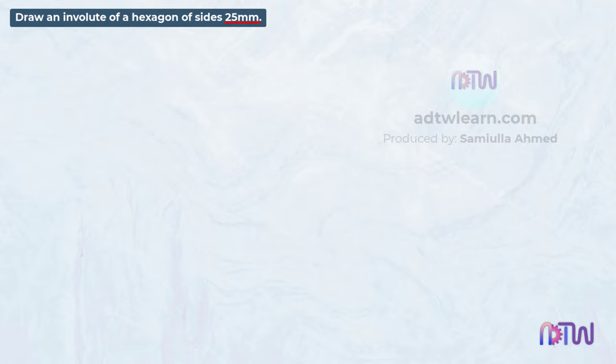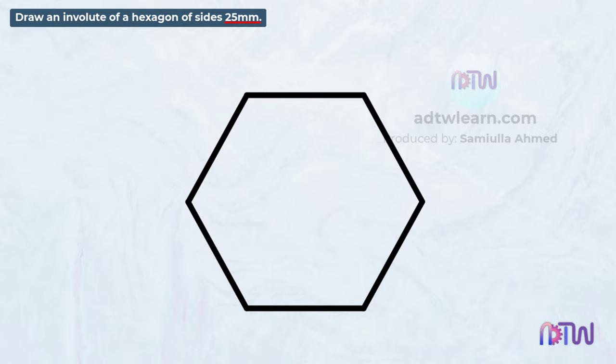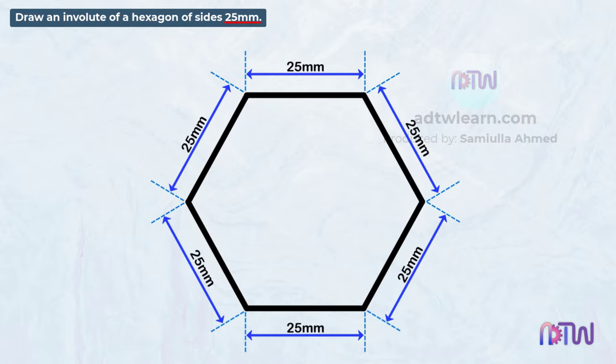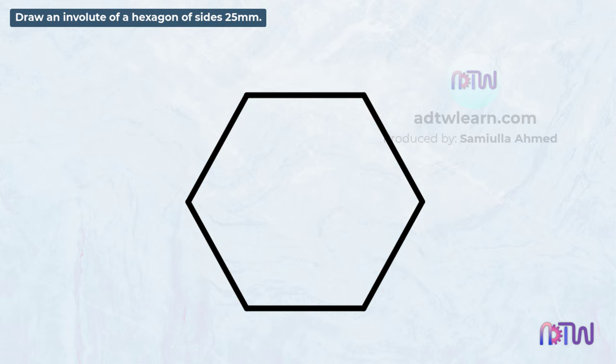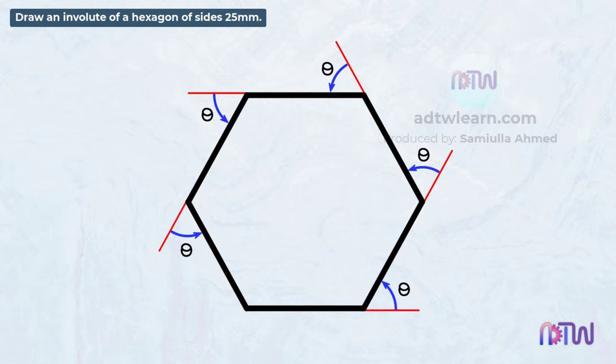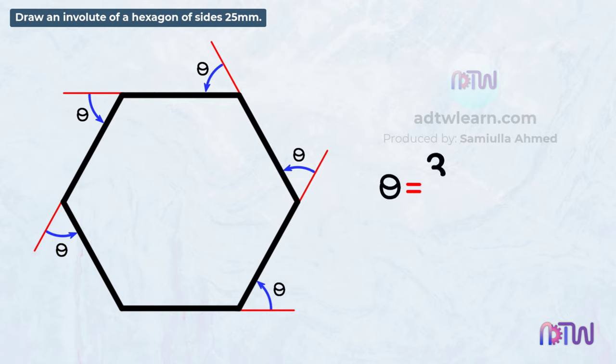Here are the instructions. Draw an involute of a hexagon of sides 25 millimeters. In this question, the length of the sides of the hexagon is given as 25 millimeters, meaning each side is 25 millimeters long. To draw this hexagon, we need to know the angle made by its sides. These outer angles made by each side can be calculated using this equation: angle theta is equal to 360 degrees divided by n.